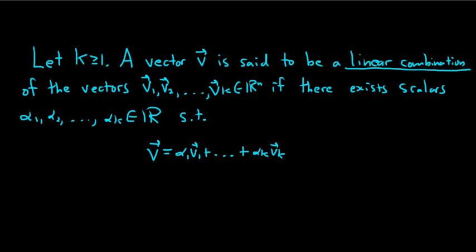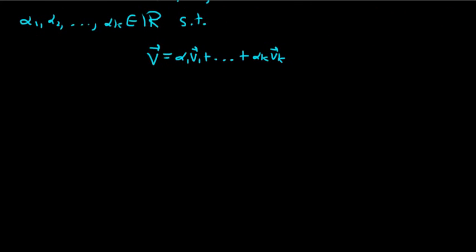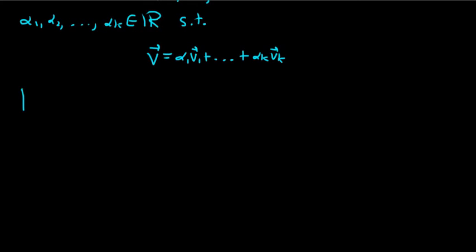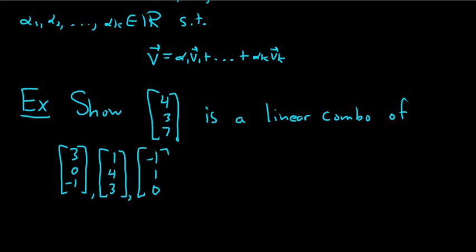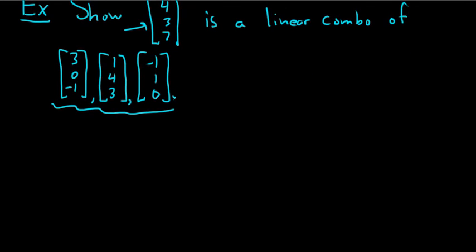So let's go ahead and do an example. Let's do a somewhat challenging example. It looks tough. I haven't done it yet, so we'll have to be really careful. So we're going to show that this vector here, 4, 3, 7, is a linear combination of, and then we have other vectors here.